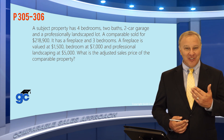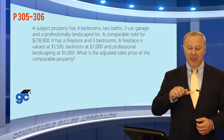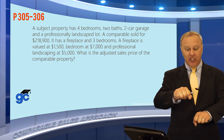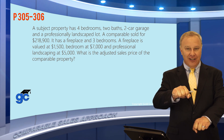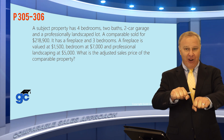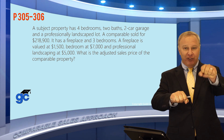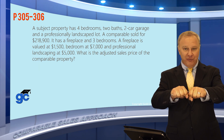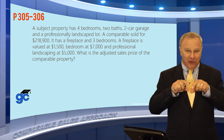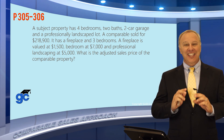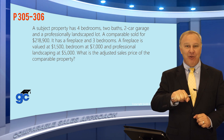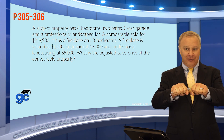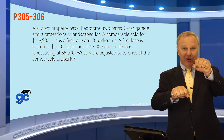The way I learned this when I got my license almost 30 years ago was to make one hand the subject property and the other hand the comp. If the comp is inferior to the subject, then you adjust the price of the comp up. If the comp is superior to the subject, then you would adjust the price of the comp down. Your subject property doesn't move. If your comp is inferior, you add. If your comp is better, then you subtract.